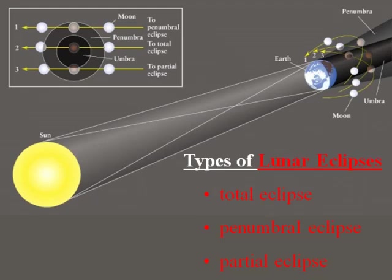The lunar eclipse occurs a little differently — that is when the moon goes into our shadow. We have the darker core of the umbra and the lighter outer penumbra. The moon can go through that shadow in any number of ways, but here is a simplified diagram.